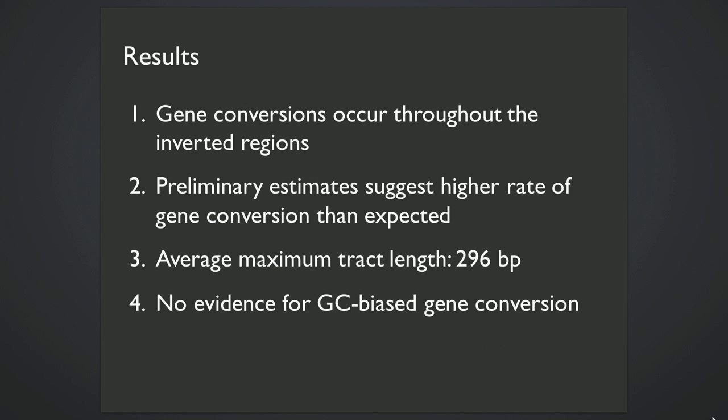So to summarize what I'm seeing, gene conversions occur throughout these inverted regions. And my preliminary estimates of gene conversion rates suggest a much higher rate of gene conversion than expected based on LD-based estimates. My average maximum tract length is about 300 base pairs and no evidence for GC-biased gene conversion so far.